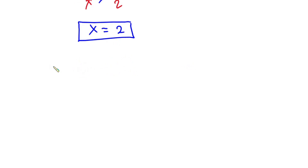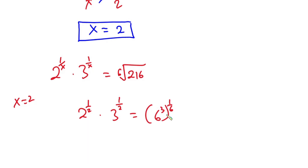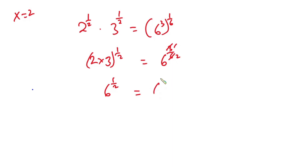Now let's go ahead and verify our answer. We have 2 to the power 1 over x times 3 to the power 1 over x should be equal to the sixth root of 216. When x is equal to 2, we have 2 to the power 1 half times 3 to the power 1 half, which should equal 6 to the power 3 over 6. So (2 times 3) to the power 1 half is 6 to the power 1 half, and 3/6 simplifies to 1/2, giving 6 to the power 1 half. Since the left hand side equals the right hand side, we can conclude that x equals 2 is the solution.